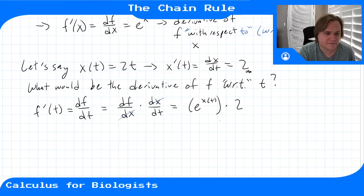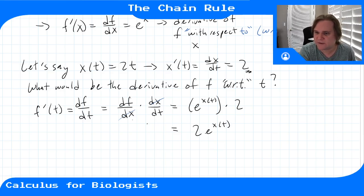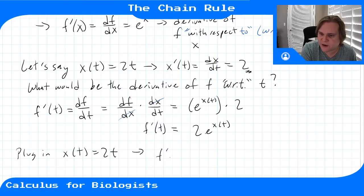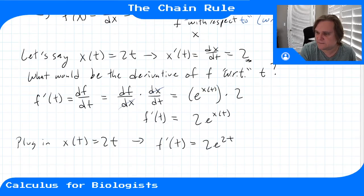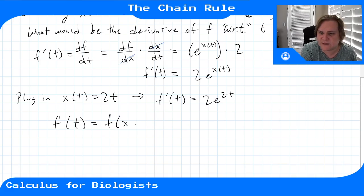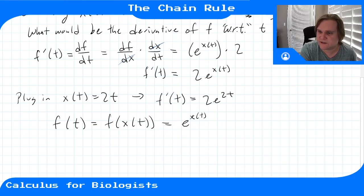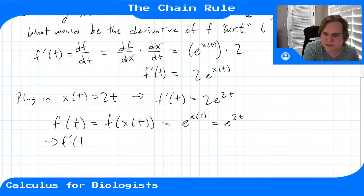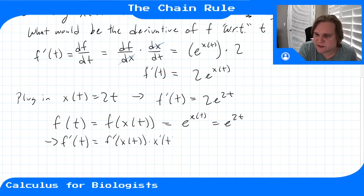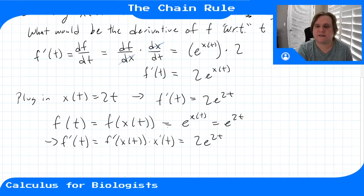So we get 2 times e to the x of t. Since this should be a function of time, we plug in x(t)=2t to get f prime of t equals 2e to the 2t. Our original function f of t was e to the 2t, and its derivative is f prime of x(t) times x prime of t, which equals 2e to the 2t. This is the chain rule.